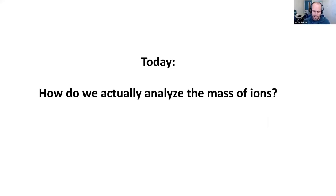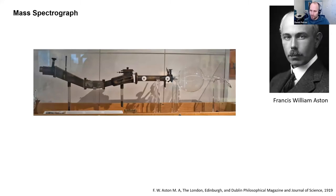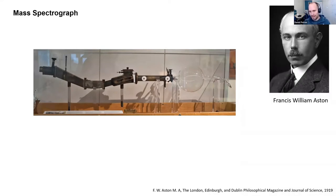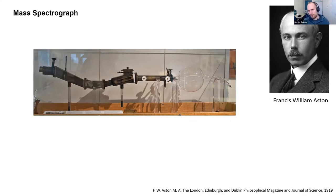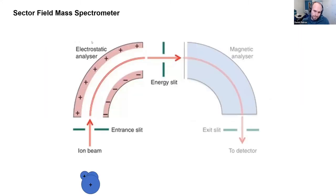Before I go into the types of instruments we have in our labs, I want to start with the very first mass spec, because it's a very nice principle to show how mass spectrometry can work. This is the mass spectrograph by Francis Aston, who won the Nobel Prize for basically separating the first ionized gases by their mass. You can see here a bent metal part which contains a magnetic field where ions are deflected depending on their mass — this is very much how more modern sector field mass specs work.